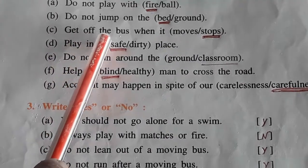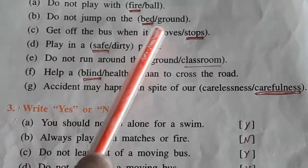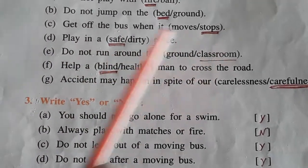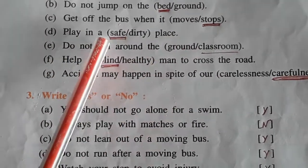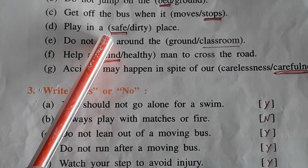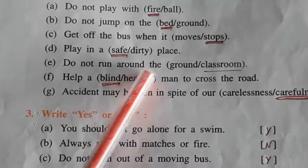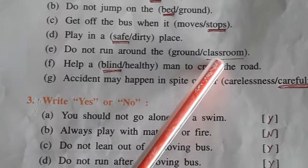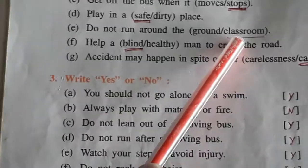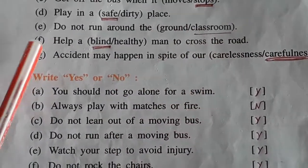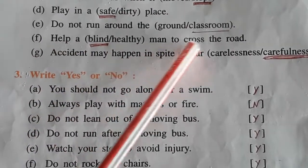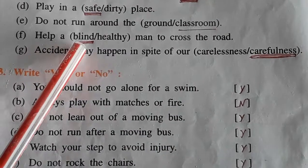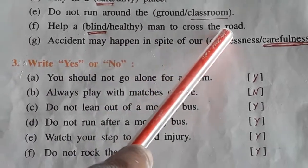C. Get off the bus when it stops. D. Play in a blank place. Answer: Play in a safe place. E. Do not run around the classroom. F. Help a blank man to cross the road. Answer: Help a blind man to cross the road.